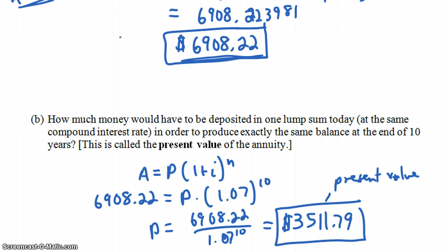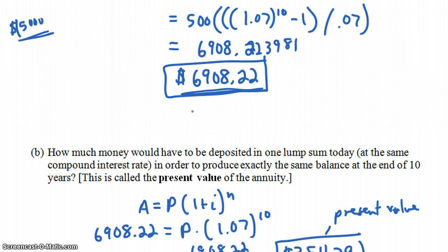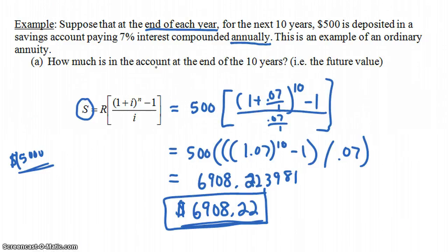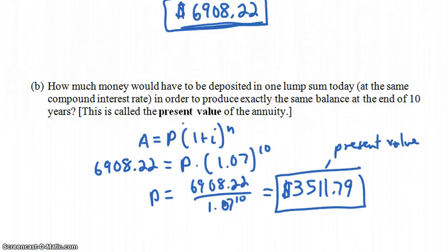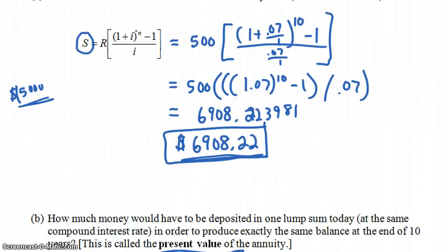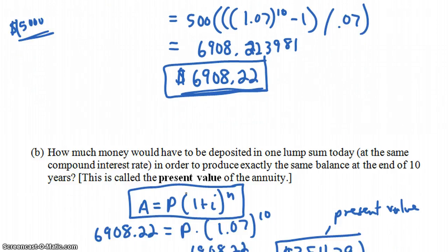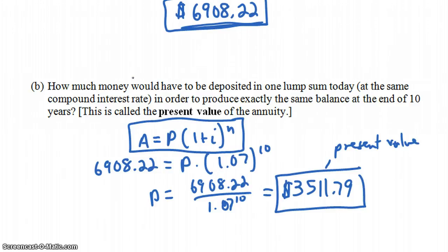That $3,511.79 is the present value. Notice that finding the present value was really a two-step process: first we found the future value using the annuity formula, then we found the present value using the compound interest formula. In the next video, we'll combine those two steps into one by doing algebra to merge the two formulas into a single present value formula.